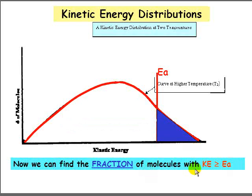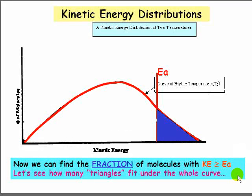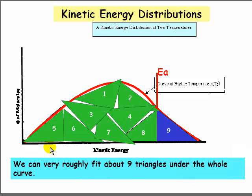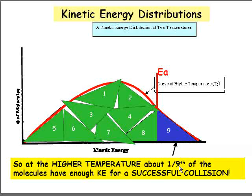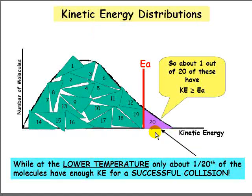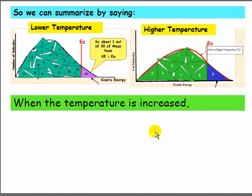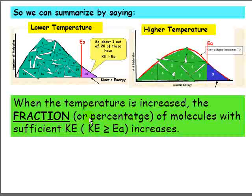We can find the fraction of molecules with kinetic energy greater than or equal to EA by fitting triangles under the whole curve. We can roughly fit about nine of these triangles under the whole curve, so about 1 in 9 molecules have kinetic energy greater than or equal to EA at the higher temperature. At the lower temperature, only about 1 in 20 molecules had enough energy. So when the temperature is increased, the fraction of molecules with sufficient kinetic energy increases.